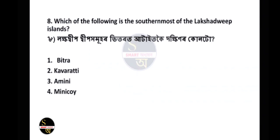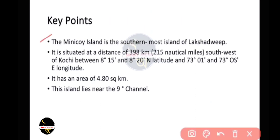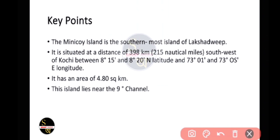Question number 8: Which of the following is the southernmost of the Lakshadweep islands? The answer is Minikoy. Minikoy island is the southernmost island of Lakshadweep, situated at a distance of 398 km southwest of Kochi.